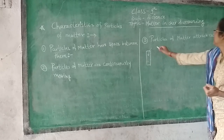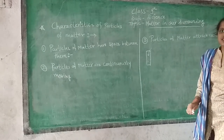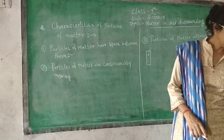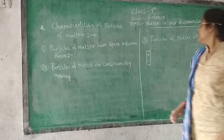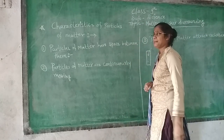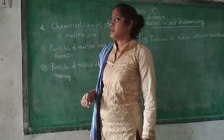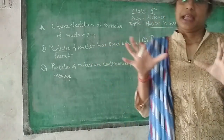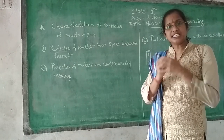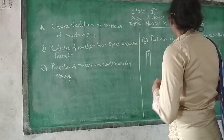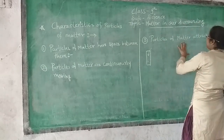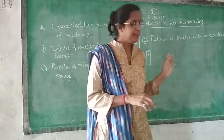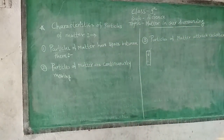The third property is that particles of matter attract each other. This can be explained by the example of a nail and a magnet — any iron object and a magnet attract each other. In the same manner, there are certain particles which attract each other.